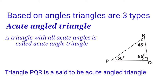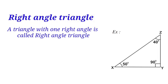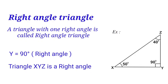Second type: right angled triangle. A triangle with one right angle is called a right angled triangle. Observe triangle XYZ — in this triangle, angle Y equals 90 degrees, and the remaining two angles are acute angles. So this is an example of a right angled triangle.